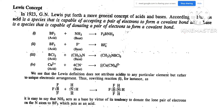Now we move to the Lewis concept of acid and base. According to Lewis, an acid is a species that is capable of accepting an electron pair to form a covalent bond, while a base is a species that is capable of donating an electron pair to form a covalent bond. Let's take the example of BF3. BF3 acts as the acid since it accepts the electron pair from ammonia.